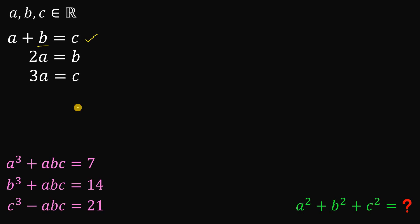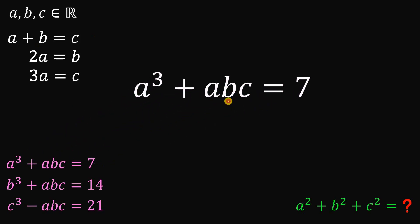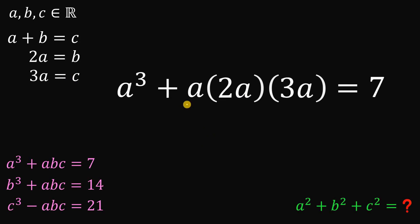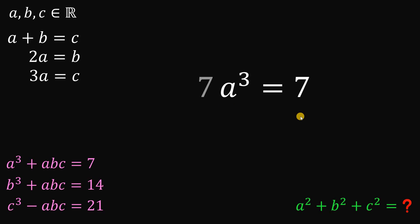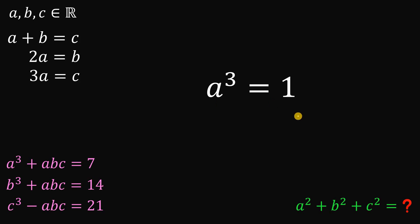Now we are ready to find the values of a, b, and c. Taking the first equation and replacing b with 2a and c with 3a, we get a cubed plus a times 2a times 3a equals 7. Multiplying gives a cubed plus 6a cubed equals 7a cubed equals 7. Dividing both sides by 7, a cubed equals 1. Taking the cube root gives three possible values, but since a, b, c are all real numbers, a equals 1.